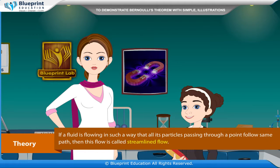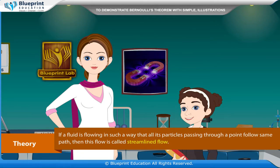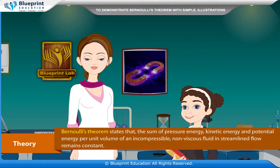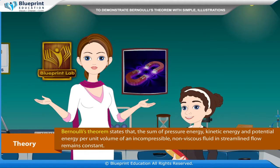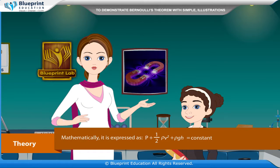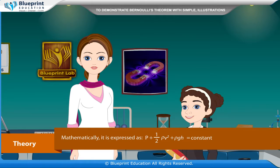Theory: if a fluid is flowing in such a way that all its particles passing through a point follow the same path, then this flow is called streamlined flow. Bernoulli's theorem states that the sum of pressure energy, kinetic energy, and potential energy per unit volume of an incompressible non-viscous fluid in streamlined flow remains constant. Mathematically, it is expressed as p plus half rho v square plus rho g h is equal to constant.